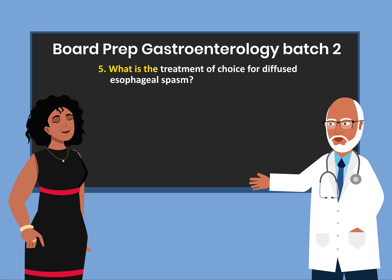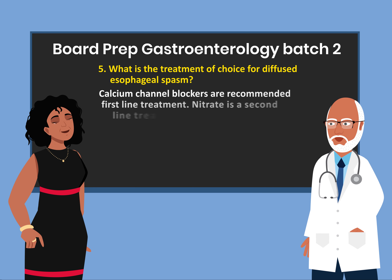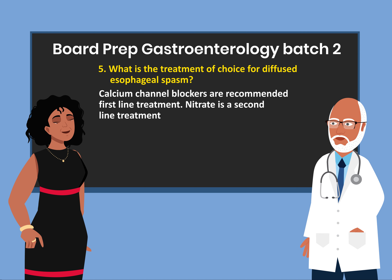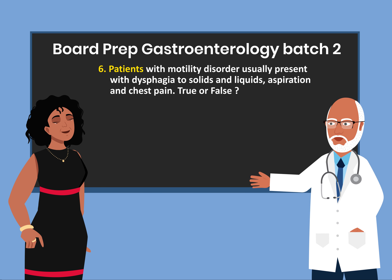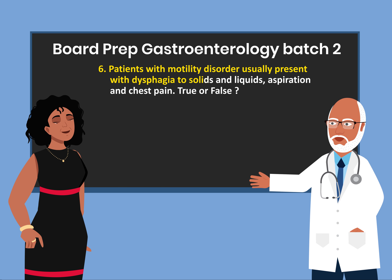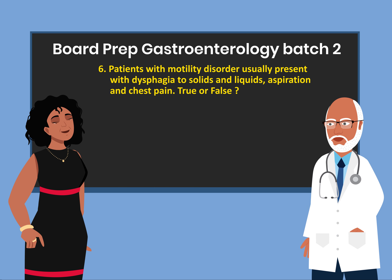Question 5: What is the treatment of choice for diffuse esophageal spasm? Calcium channel blockers are recommended as first-line treatment. Nitrates are a second-line treatment. Question 6: Patients with motility disorder usually present with dysphagia to solids and liquids, aspiration, and chest pain. True or false? True.